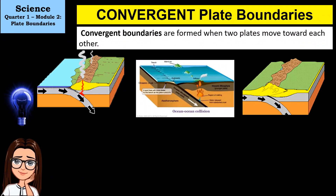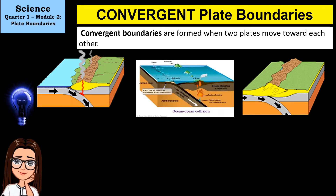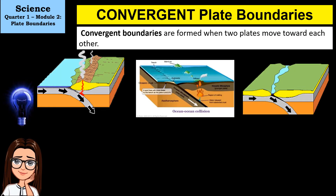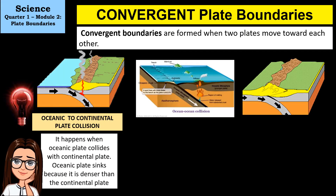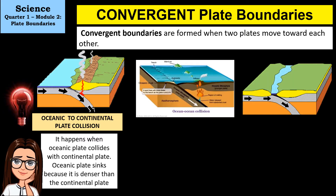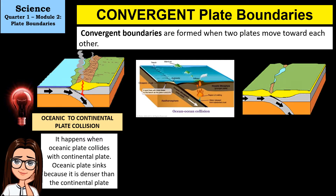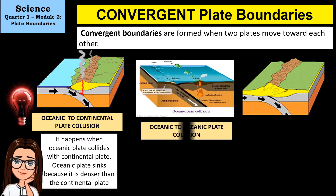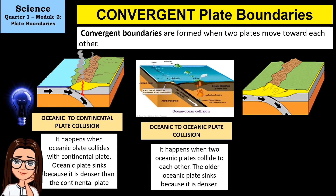The second type is convergent boundaries, which are formed when two plates move toward each other. There are three subtypes. The first is oceanic-to-continental plate collision: when oceanic and continental plates collide, the oceanic plate sinks because it is denser than the continental plate. The second is oceanic-to-oceanic plate collision: when two oceanic plates collide, the older plate sinks because it is denser than the younger one.